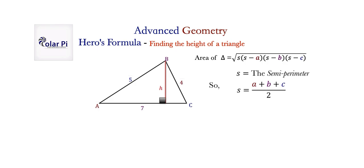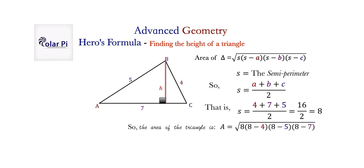Now, so, we see that here, S is going to be 4 plus 7 plus 5 divided by 2. That's 16 divided by 2. That's 8. So, we have everything we need to plug into Hero's formula. We have S, we have A, B, and C. And so, let's plug into Hero's formula and figure out the area of our triangle.